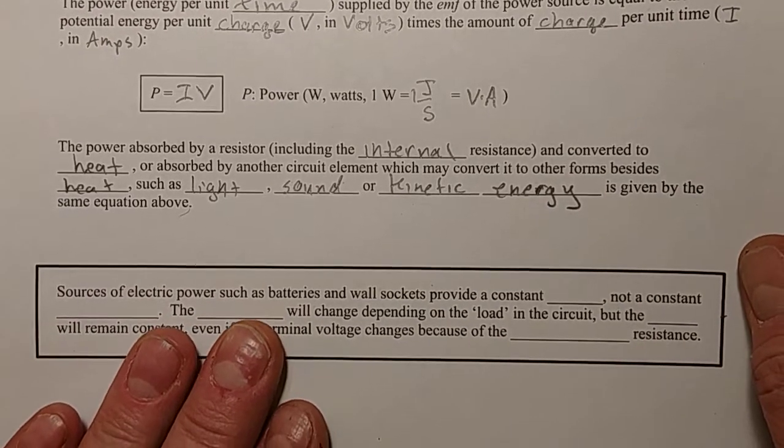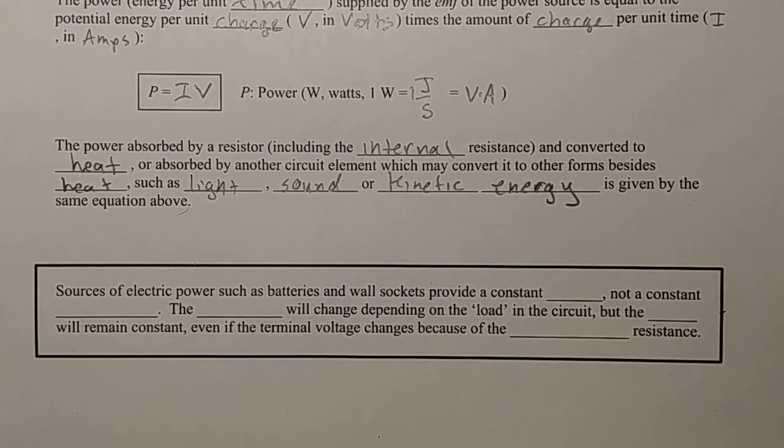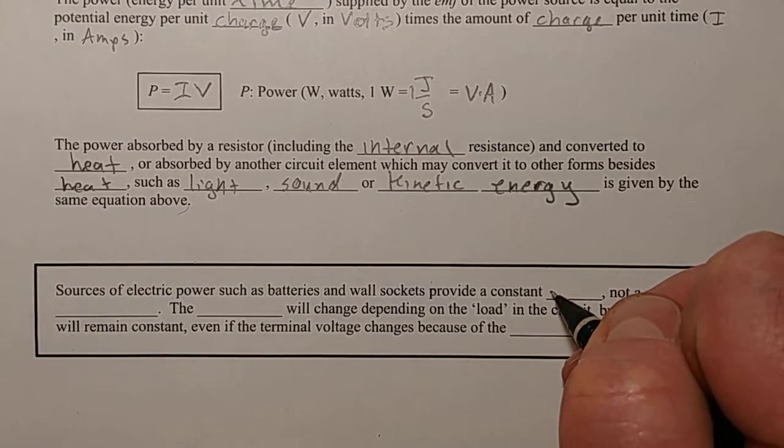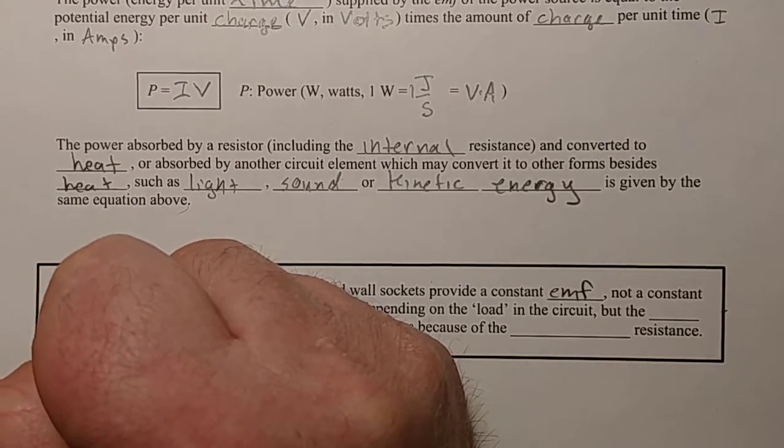And since we're talking about batteries, it seems good to point out at some point, because this seems to cause some confusion, is that sources of electrical power, such as battery and wall sockets, what do they provide? They provide a constant EMF, a constant voltage. They do not provide a constant current.